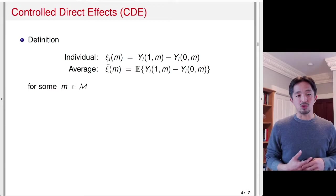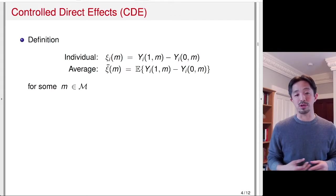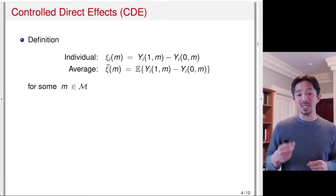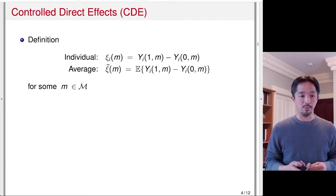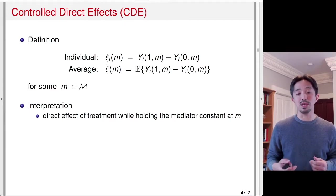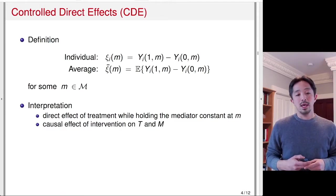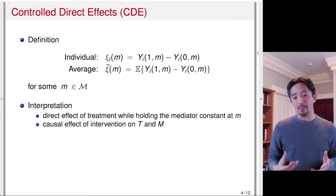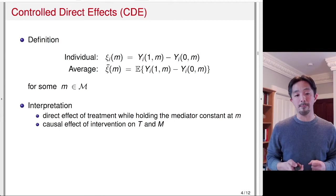The first causal quantity I'd like to introduce is called the Controlled Direct Effect, or CDE. The definition is given both at the individual level and the average level. You're holding the mediator constant, and then looking at the difference in potential outcomes between when you're treated and when you're in the control group. You can take the expectation to define the average Controlled Direct Effect as well. The interpretation is: it's the direct effect of treatment while holding the mediator constant at m — it's the causal effect of an intervention on both T and M.